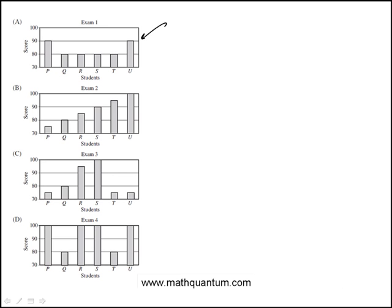So here we're shown the scores of six students P, Q, R, S, T, and U in four exams, which are these choices A, B, C, D.